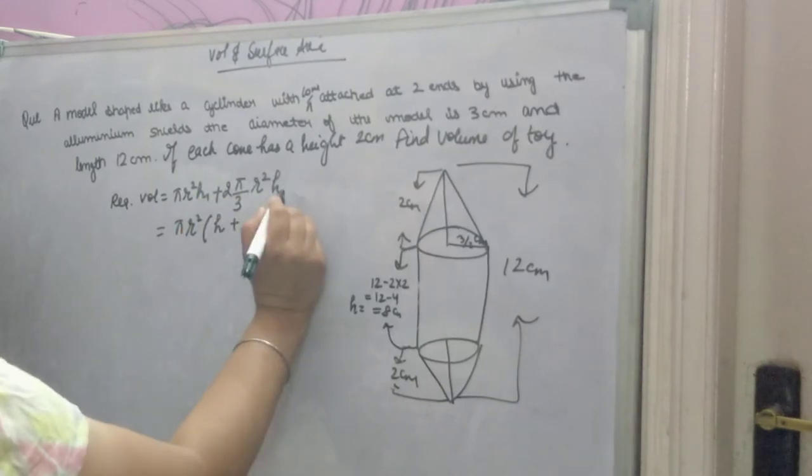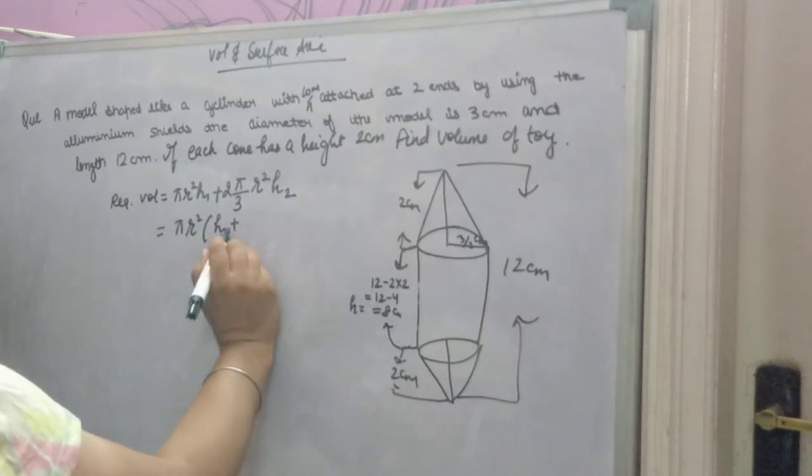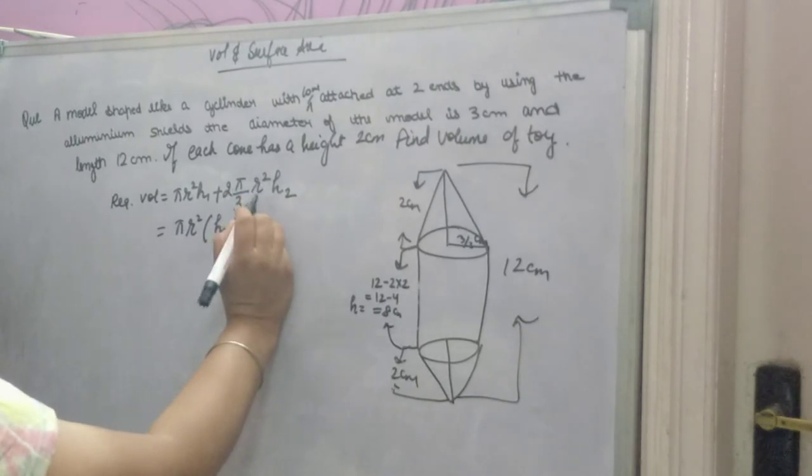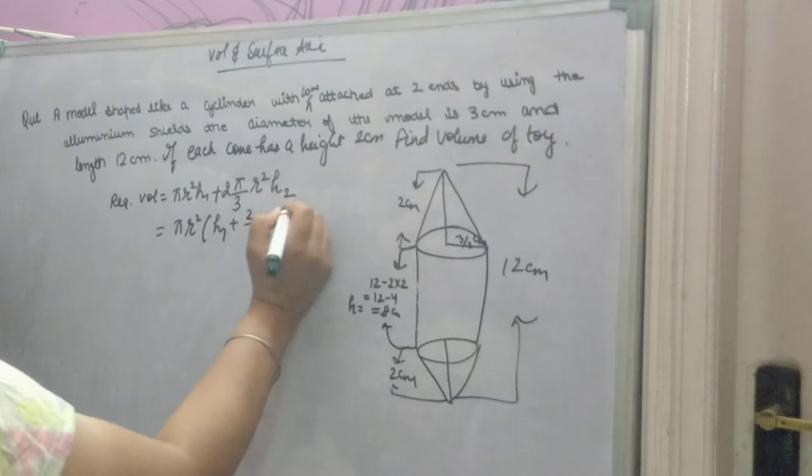Suppose this you take as h1, this as h2. h1 will remain, and pi r square you took common. Here, 2 by 3 will remain inside with h2.